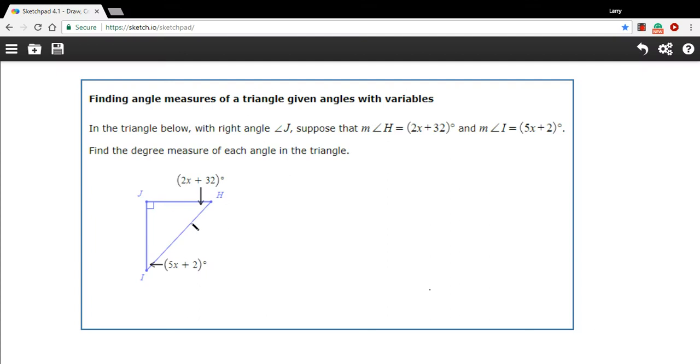In this problem, we've got a triangle, and instead of degree measures for a couple of the angles, they've given us these algebraic expressions. And what they're asking us to do is to find what the actual degree measures are for each of these. This shouldn't be too tough.